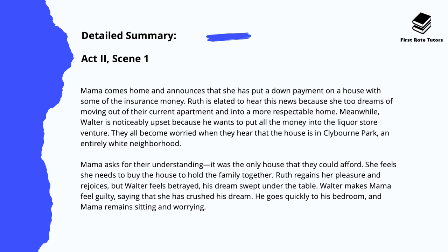They all become worried when they hear that the house is in Clybourne Park, which is an entirely white neighbourhood. Mama asks for their understanding — it's the only house that they can afford, and she feels they need to buy a house to hold the family together. Ruth regains her pleasure and rejoices, but Walter feels betrayed — his dream is swept under the table. Walter makes Mama feel guilty, saying that she's basically crushed his dream. He goes quickly to his bedroom and Mama remains sitting and worrying.